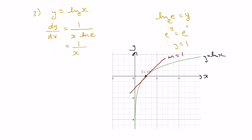What if we wanted to know the slope of the tangent line when x equals 4? Drawing in the tangent line at that point and substituting 4 into the derivative, we get 1 over 4, which is 0.25. So the slope of the tangent line at x equals 4 is one quarter, or 0.25.